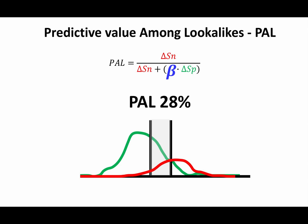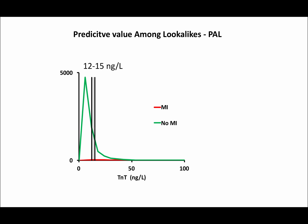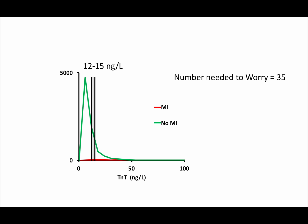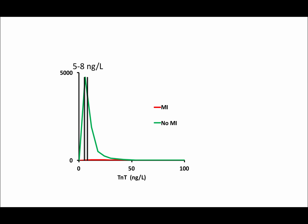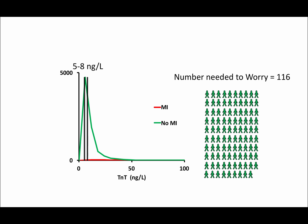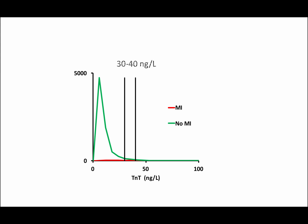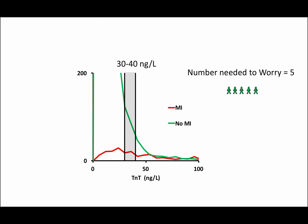The lower the myocardial infarction prevalence, the larger the beta factor. The result of PAL can be described as the number of false positive patients that you need to worry about to find one patient with myocardial infarction — number needed to worry. The number needed to worry is 35 at 12 to 15 nanograms per liter, and 116 at 5 to 8 nanograms per liter in this cohort. To appreciate the relation between patients with and without myocardial infarction at 10 to 14 nanograms per liter, we adjust the y-axis once more, and the number needed to worry is 5.